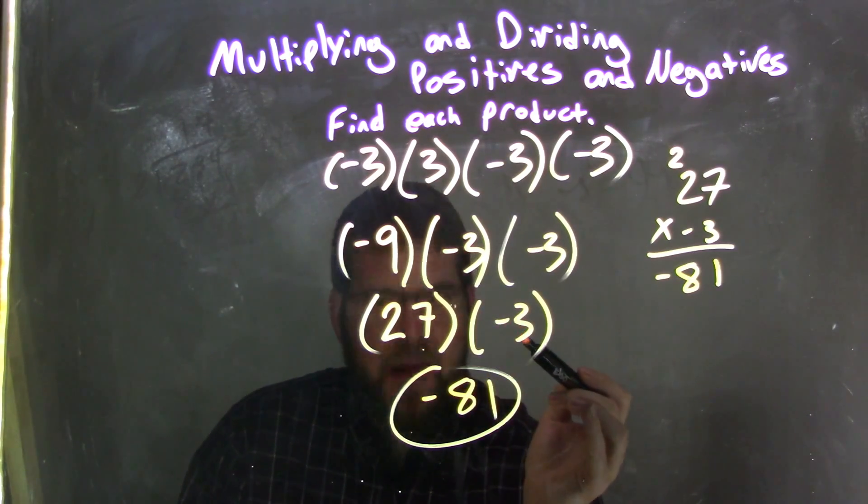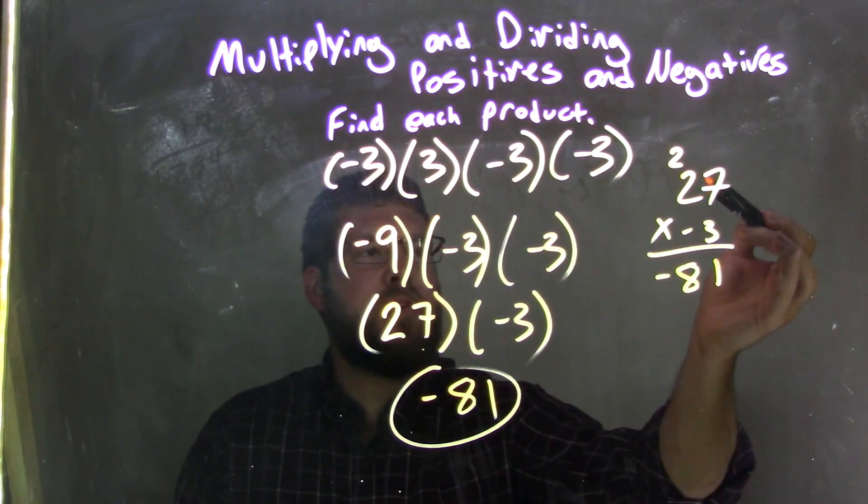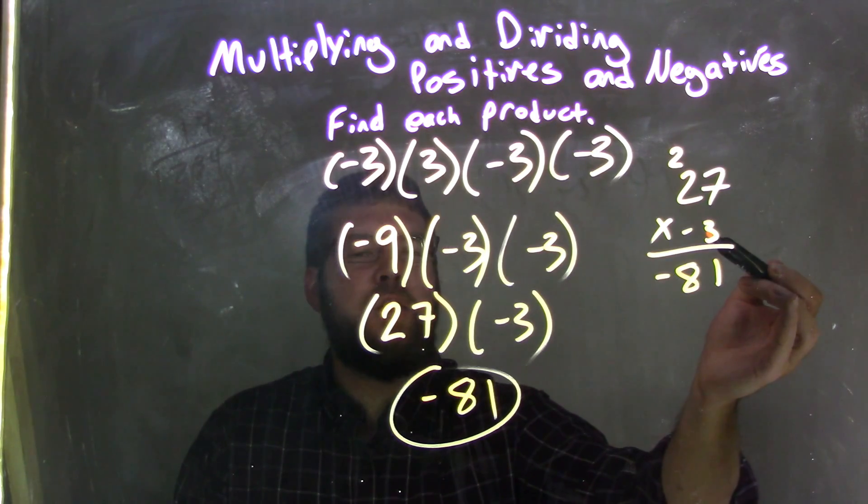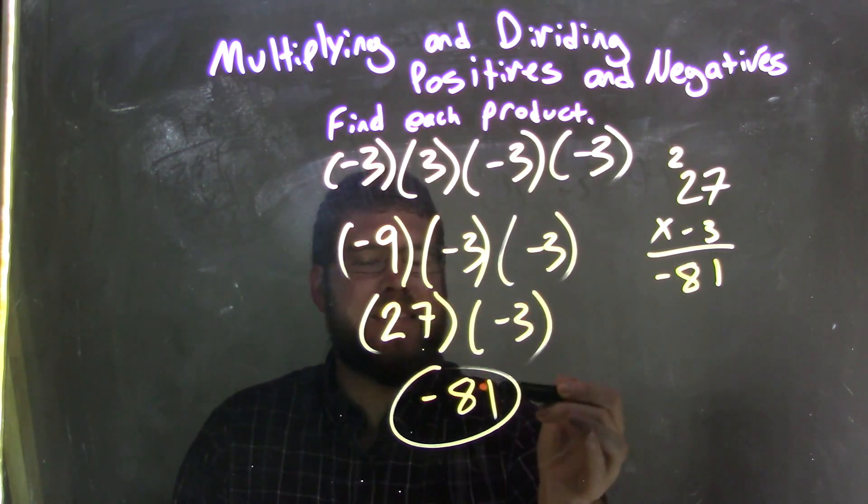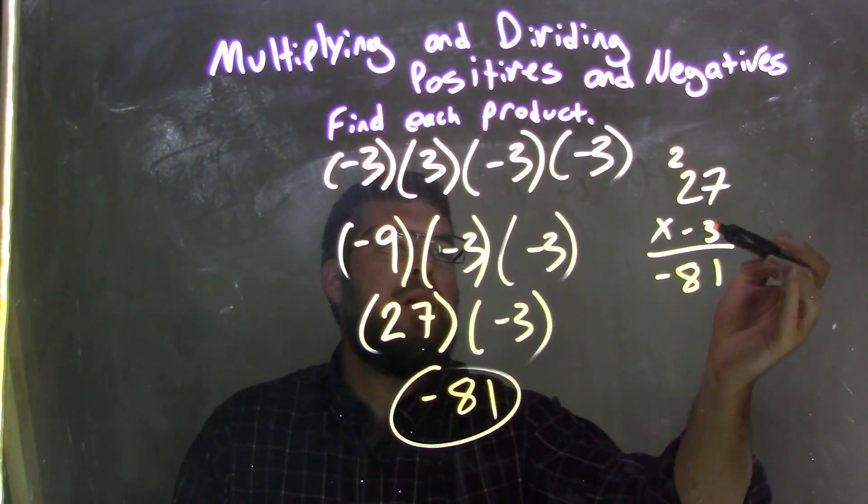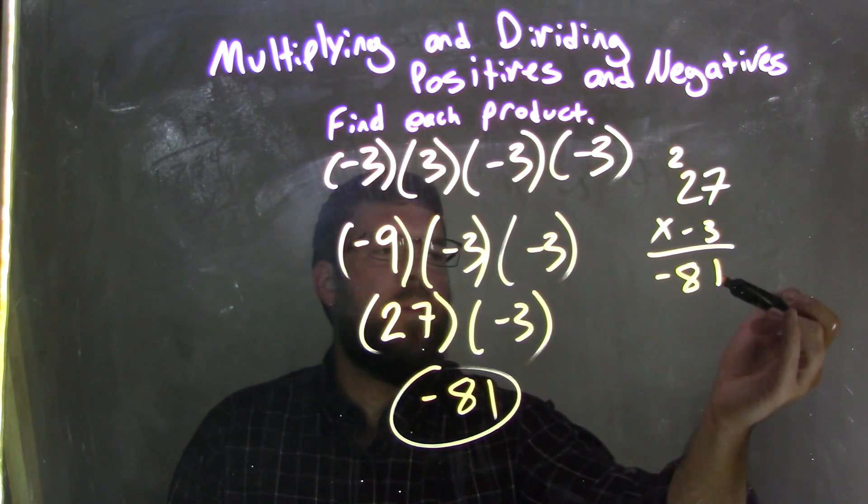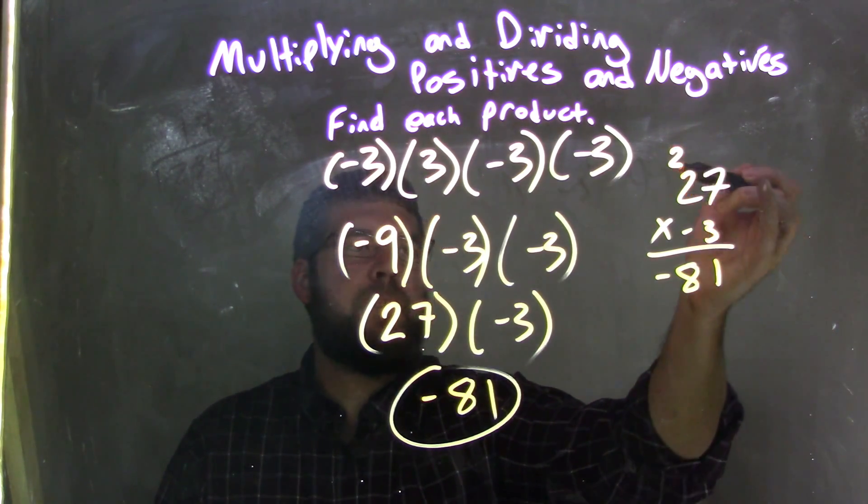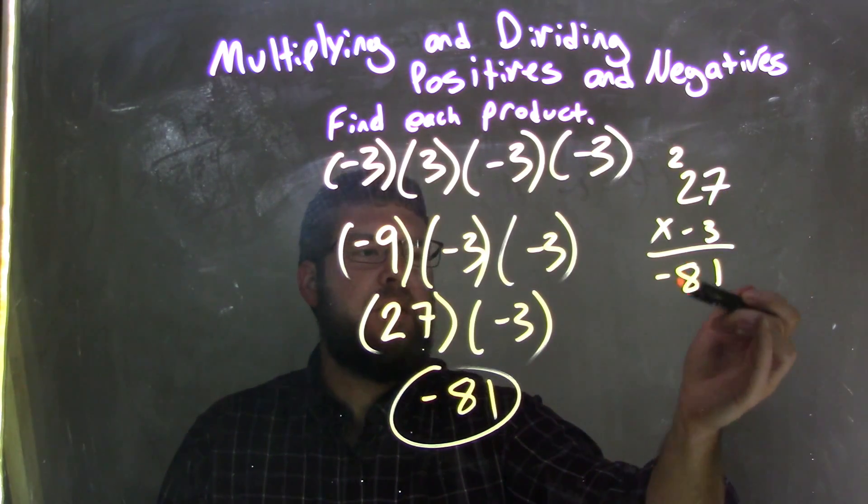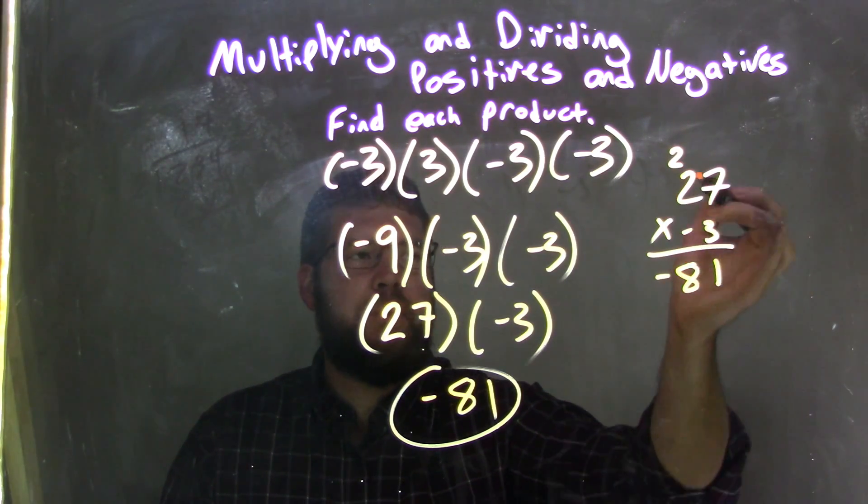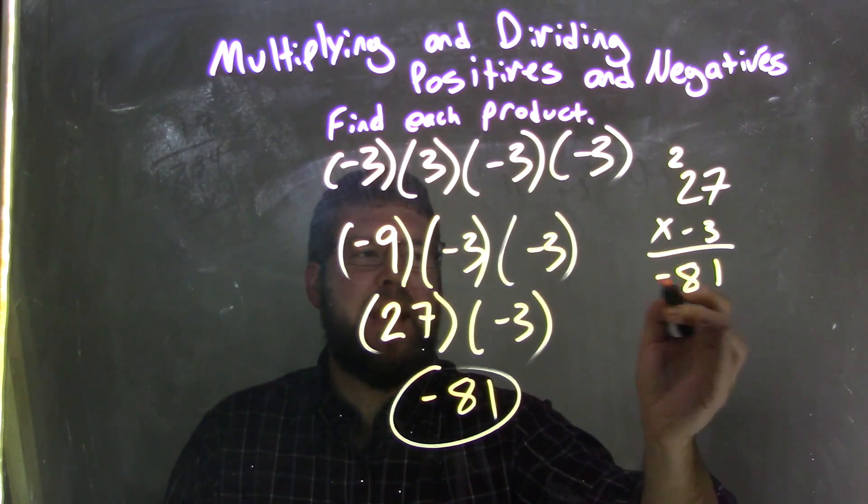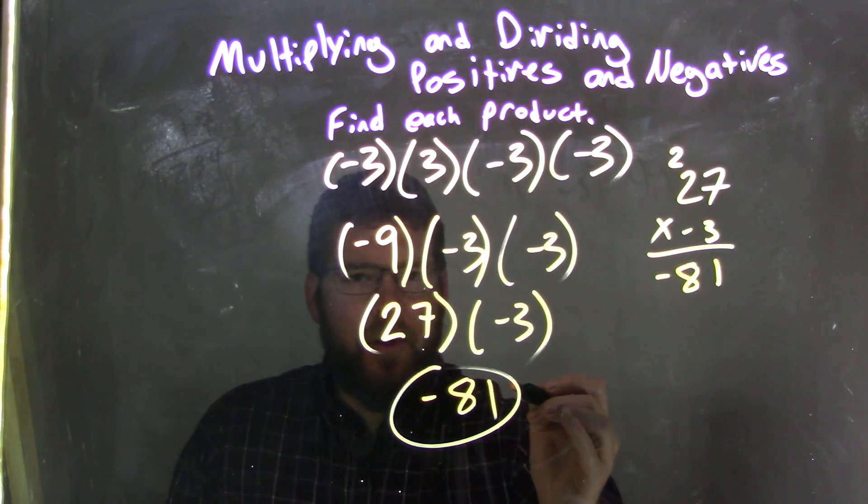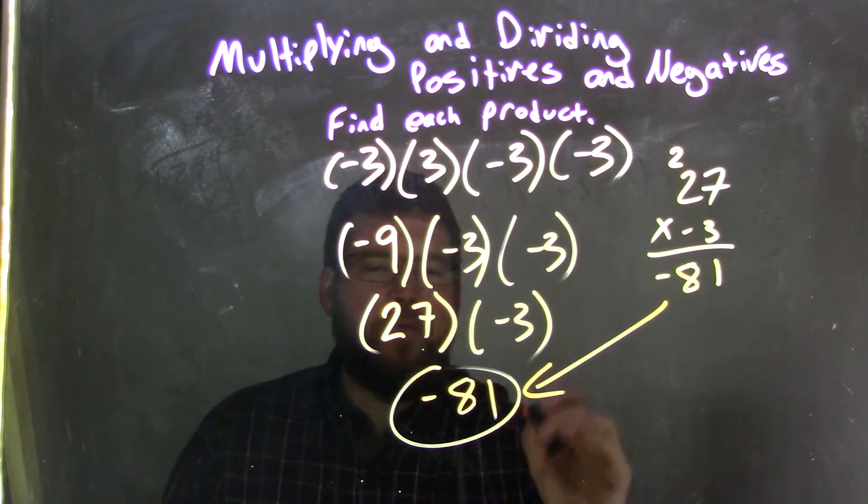Now I'm left with 27 times negative 3. So I use the traditional method here: 27 times negative 3, knowing that a positive times a negative is going to be negative when it's all said and done. 3 times 7 is 21. 1 goes down here, 2 up there. 3 times 2 is 6, plus 2 is 8. 8 goes down here, and the negative because it's a positive times a negative is negative. So it's negative 81, and negative 81 here is our final answer.